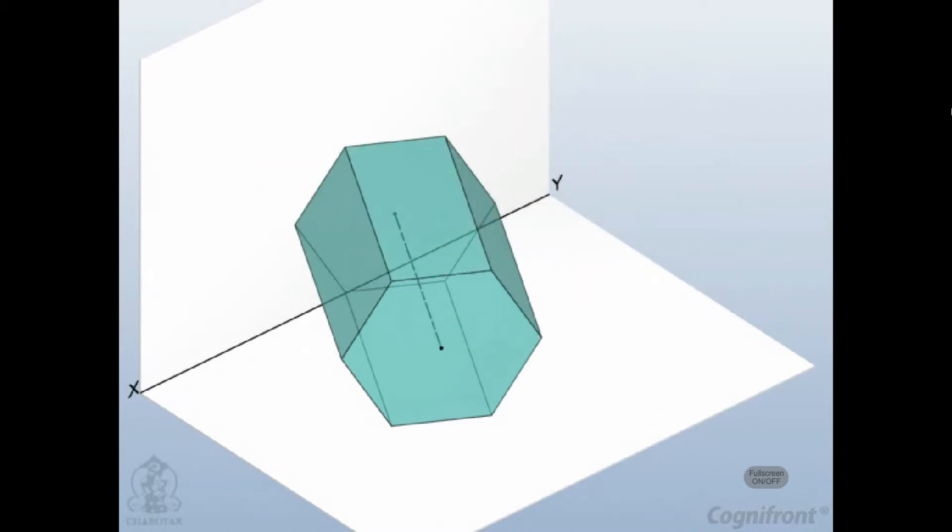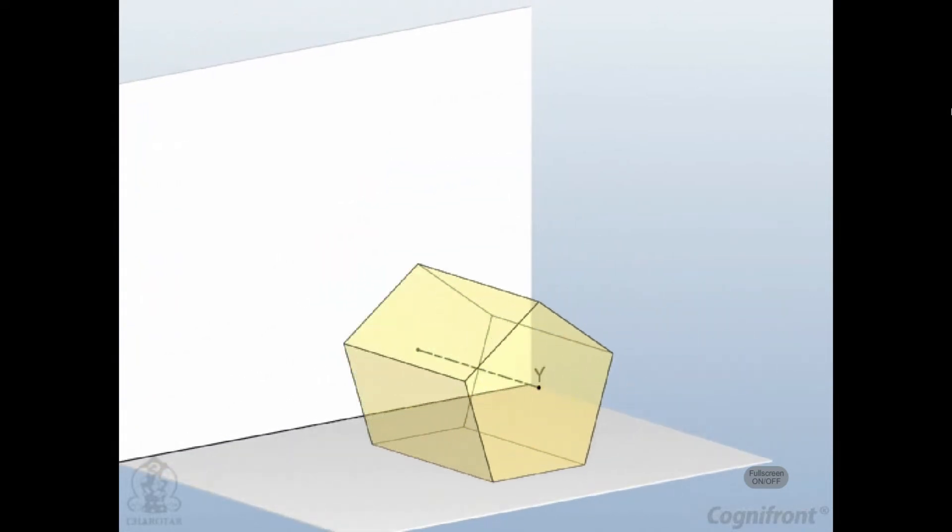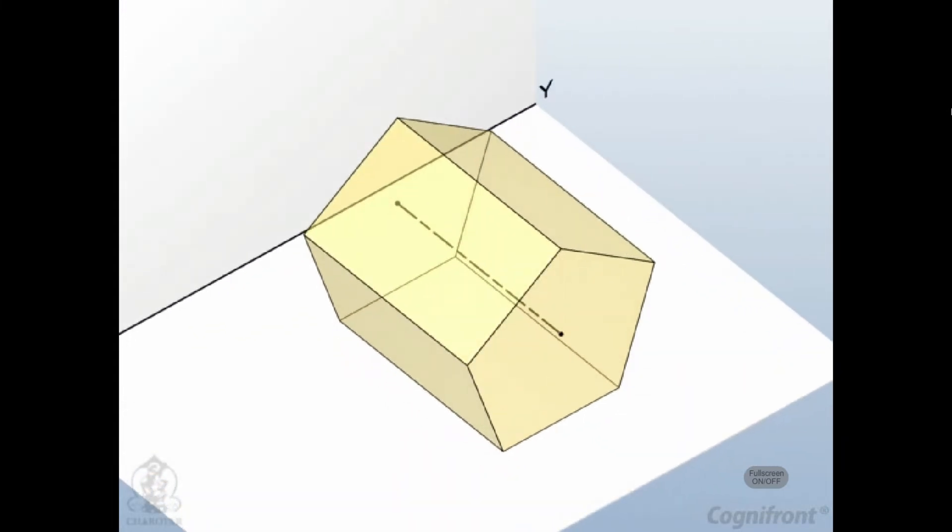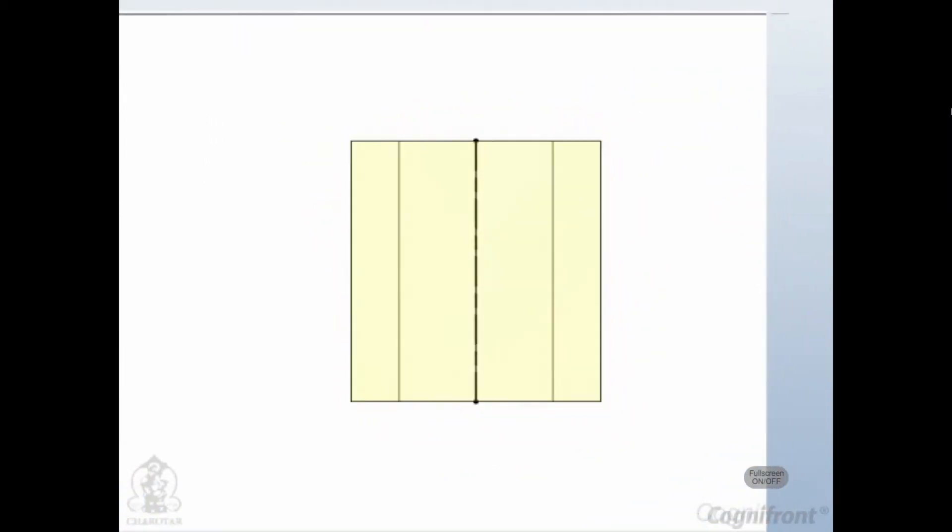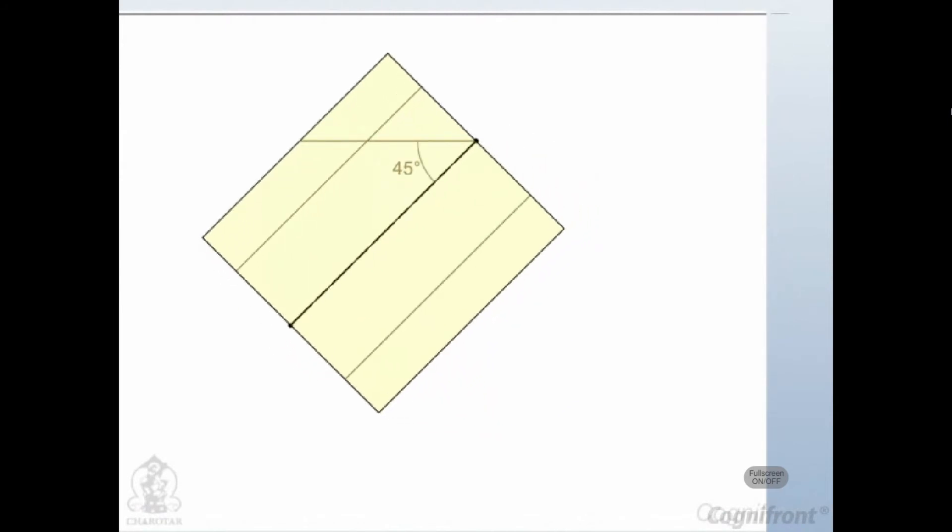To understand this method, let's solve a problem. A pentagonal prism has base side length of 25 mm and axis length of 50 mm. It is resting on one of its rectangular faces on HP. The axis is inclined at 45 degrees to the VP.